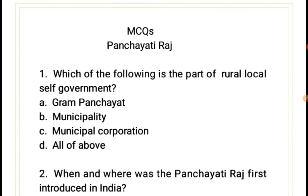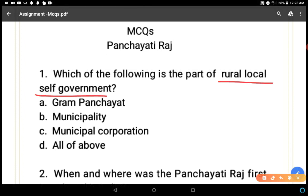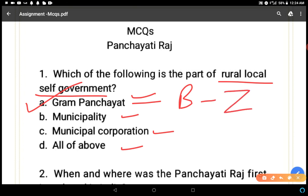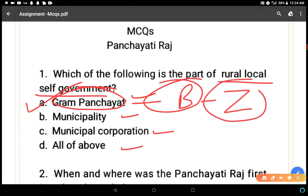First question: which of the following is part of rural local self-government? Options are: gram panchayat, municipality, municipal corporation, or all of the above. The correct answer is A — gram panchayat — because rural local self-government has three tiers: gram panchayat, block samiti, and jila parishad.